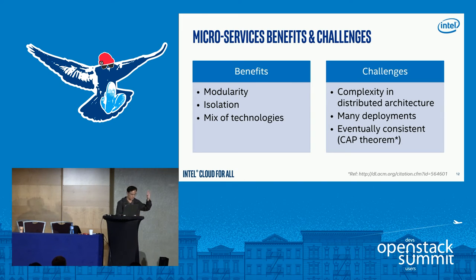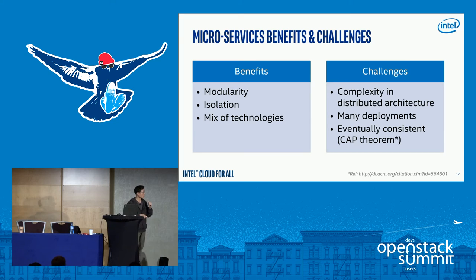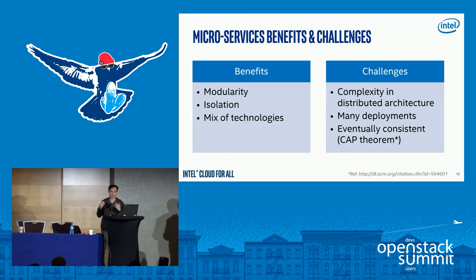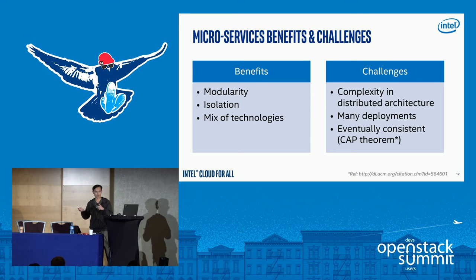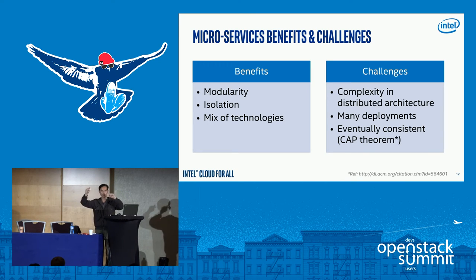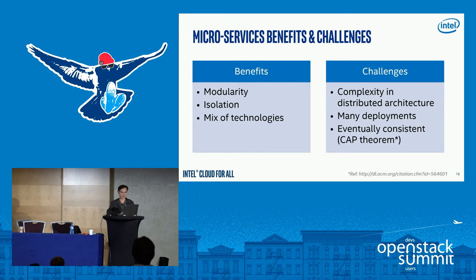Microservices do have some challenges, especially when new to microservices design in distributed architectures. The way we handle transactions is totally different in distributed architectures, and we face challenges with network latencies and network failures. Testing and debugging can be more challenging as well. When doing logging, make sure you have a correlation ID between service calls — because if you have hundreds of microservices all calling each other, you need to trace each request between services using that correlation ID.